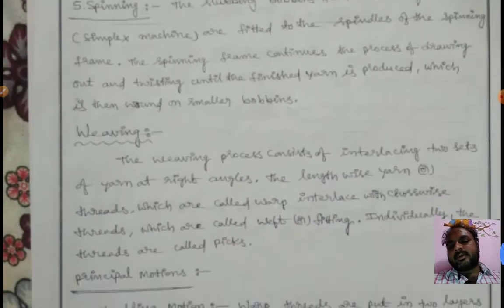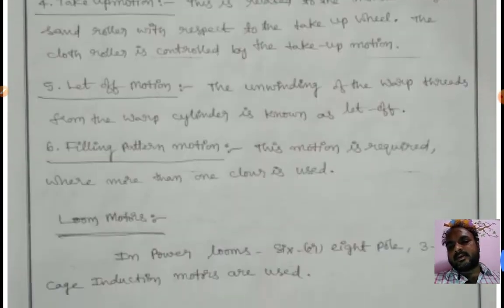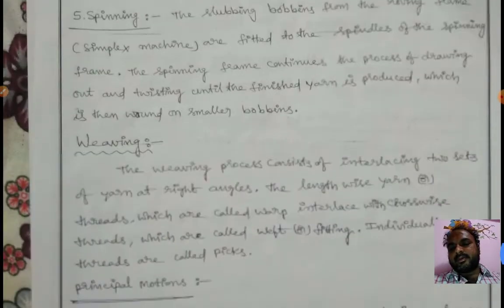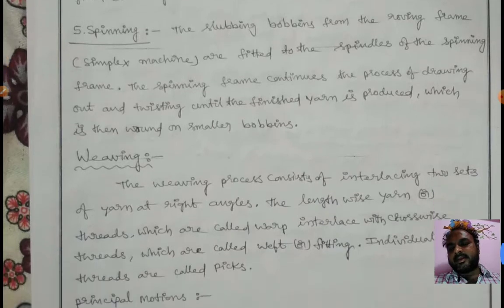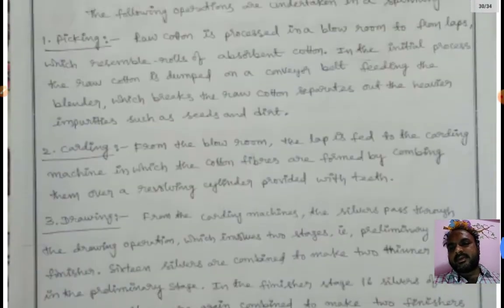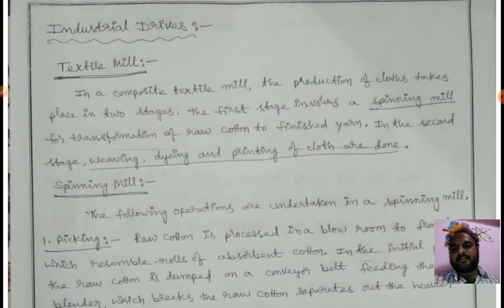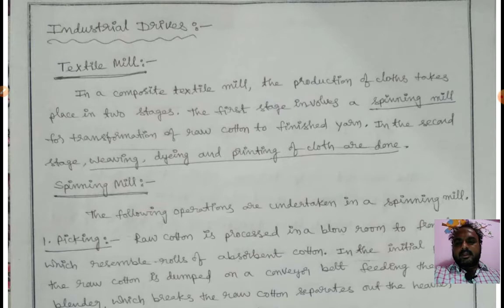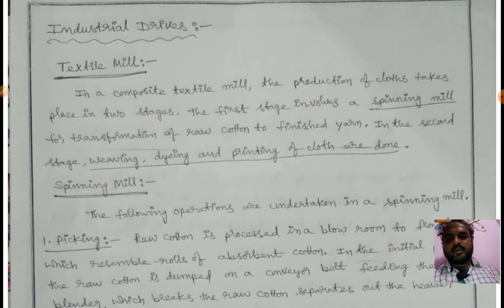First we'll see textile mills. In a composite textile mill, the production of cloth takes place in two stages. The first stage involves a spinning mill for transformation of raw material to finished yarn. In the second stage, weaving, drying, and printing of cloth are done.